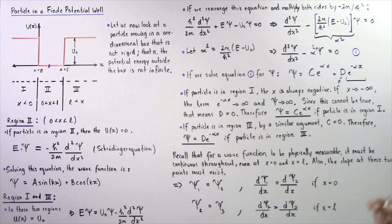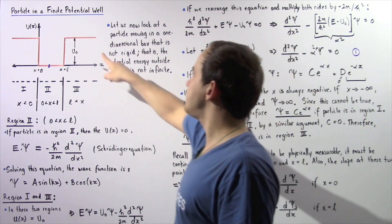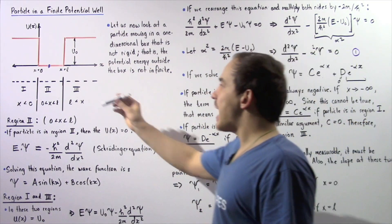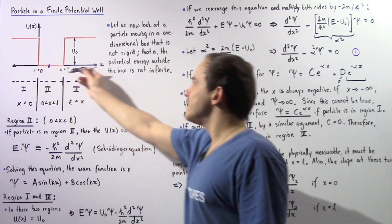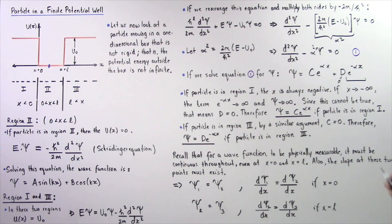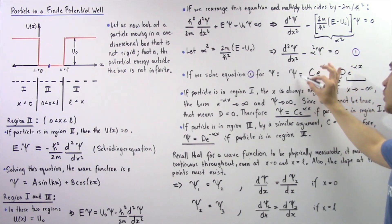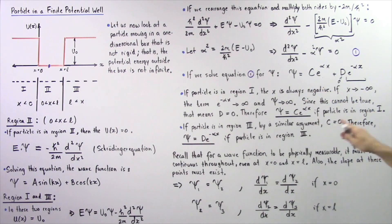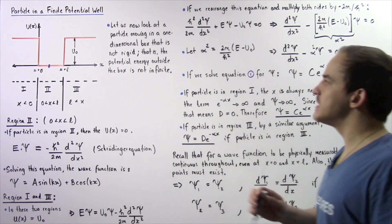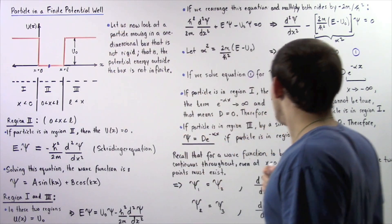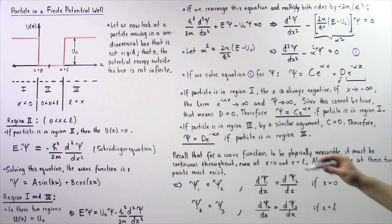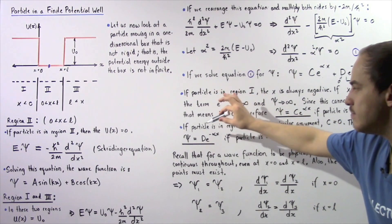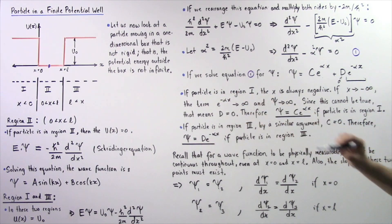By the same argument, if the particle is in region 3, x can increase to positive infinity, and the term e^(αx) would diverge to infinity. To prevent this, we set C equal to zero, so the wave function for region 3 is ψ₃ equals D·e^(-αx).